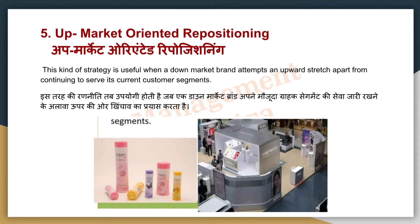Next is upmarket-oriented repositioning. This strategy is useful when you were in a down market — a low price market — and you continuously increase your segment and target the upper segment as well. For example, Pond's — they used to sell only powder, but now Pond's has creams, white beauty, and other products. First they targeted the down market, and then they opened their market upward.